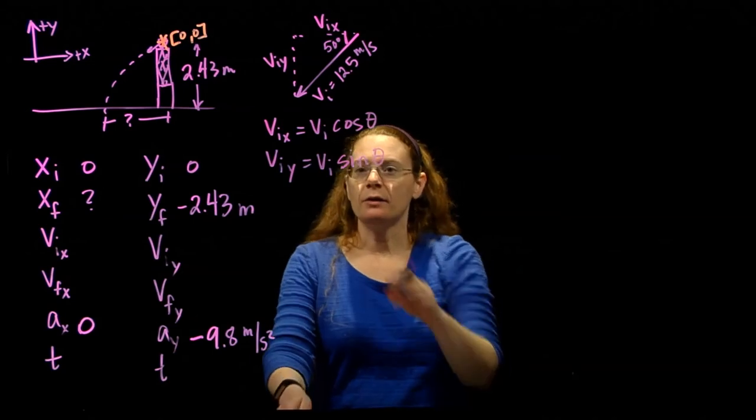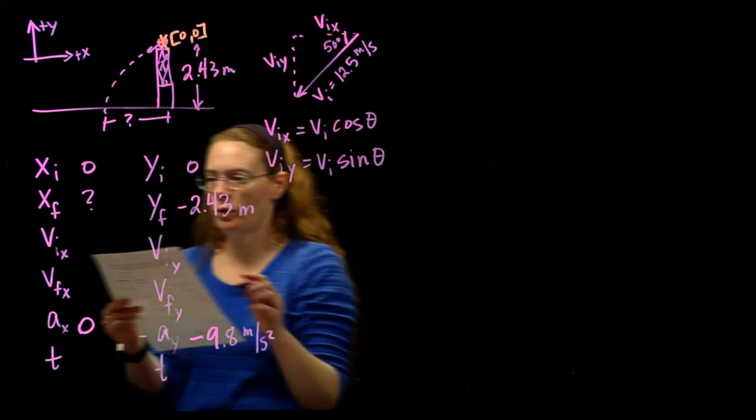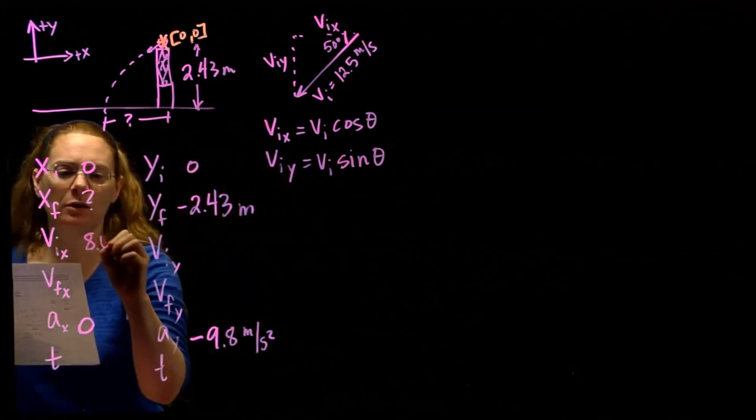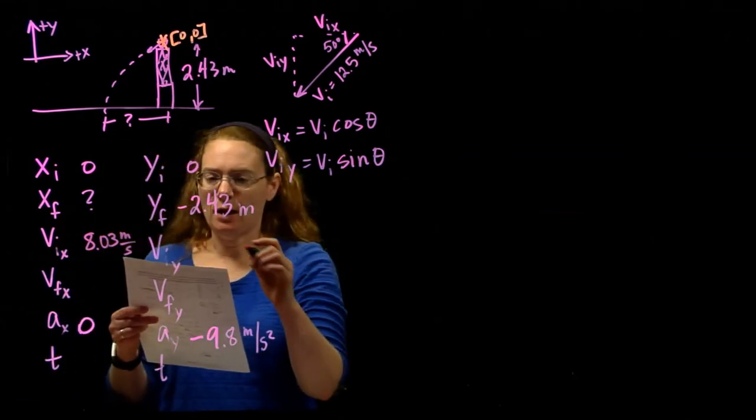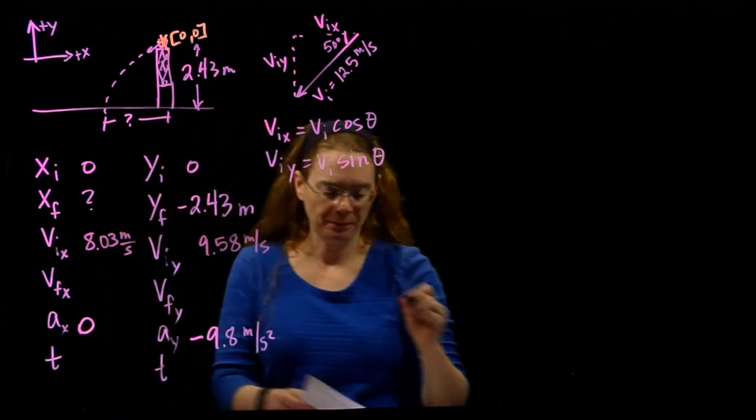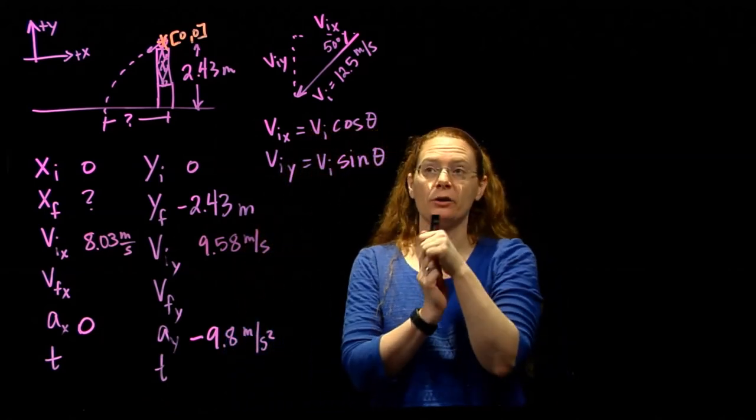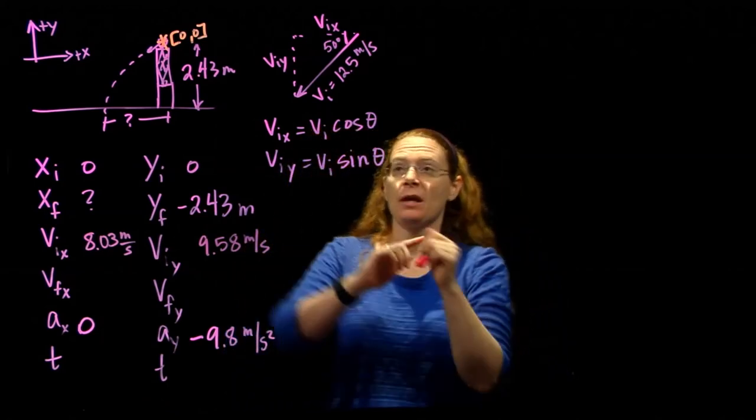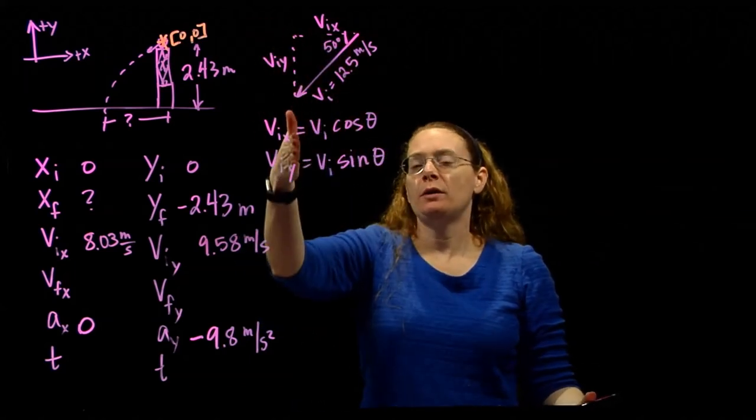Okay, so we can do the math. It's going to be 12.5 times the cosine of 50, and what do we get? We get 8.03 meters per second horizontally, and 9.58 meters per second vertically. But we have to be careful, because look at the direction those are going.